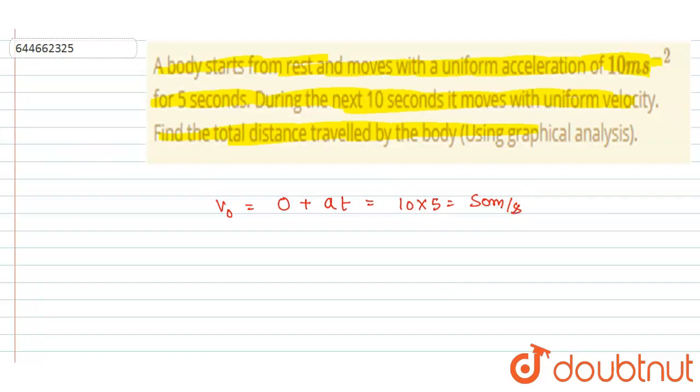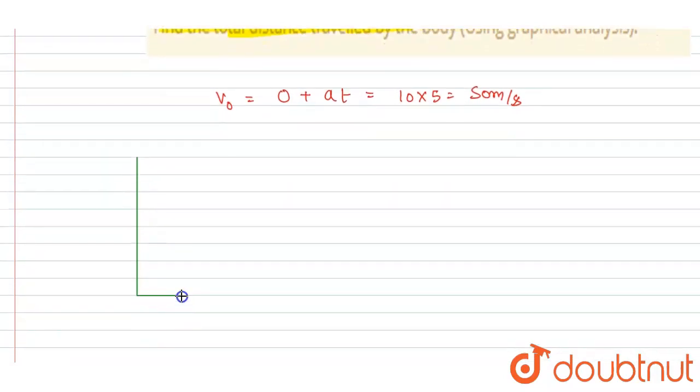Now we can draw the graph. If you see here the v-t curve, for first 5 seconds it travels with a constant acceleration and it reaches to a maximum velocity. Then it moves with a constant velocity.